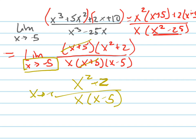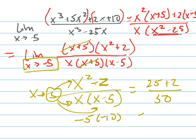Now I can use direct substitution and plug in negative 5 into all of my x values here. So that would equal 25 plus 2, all over negative 5 times negative 10, which is 50. So that's 27 fiftieths.